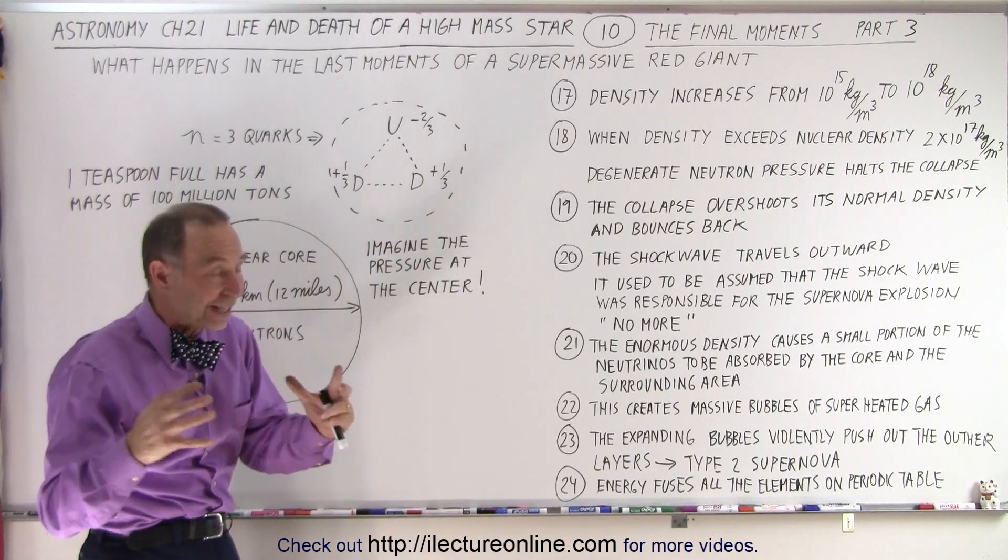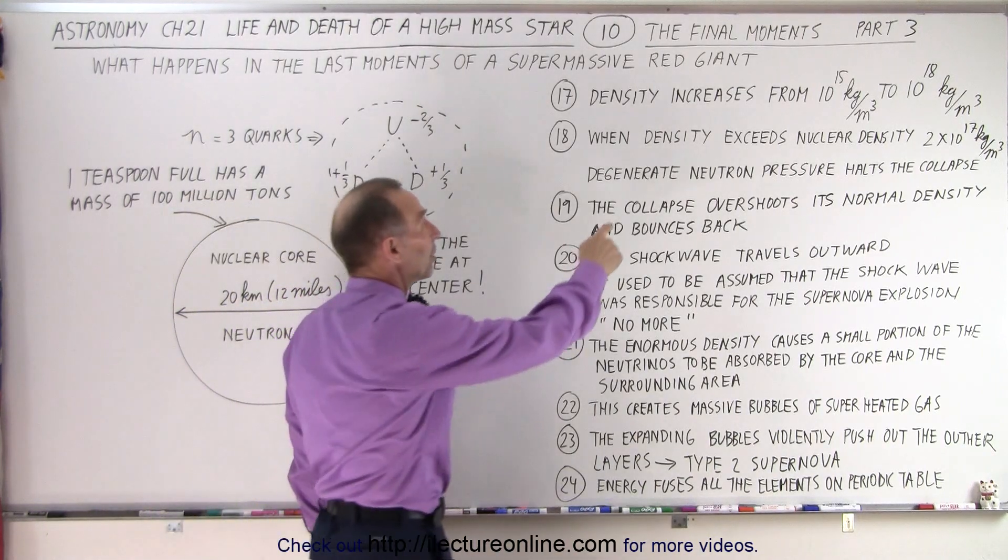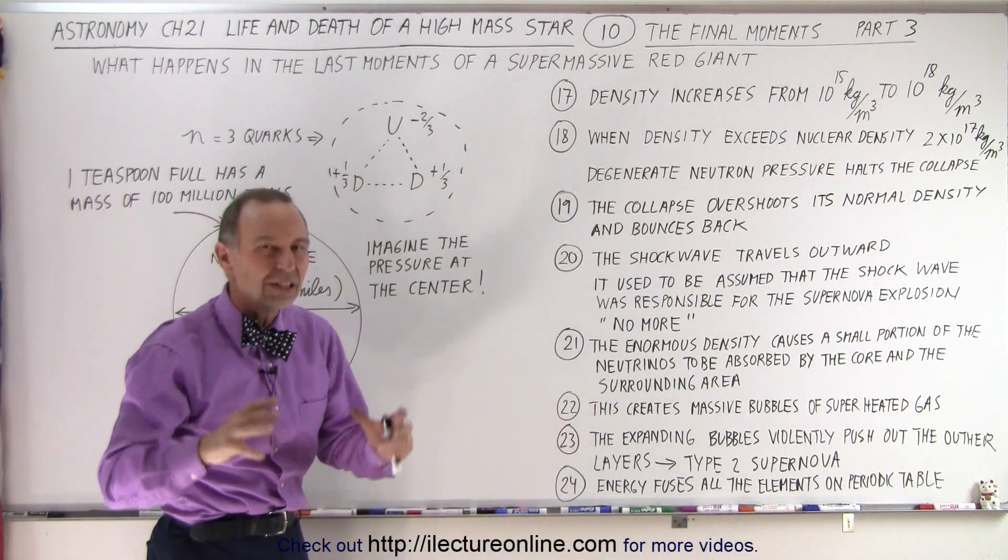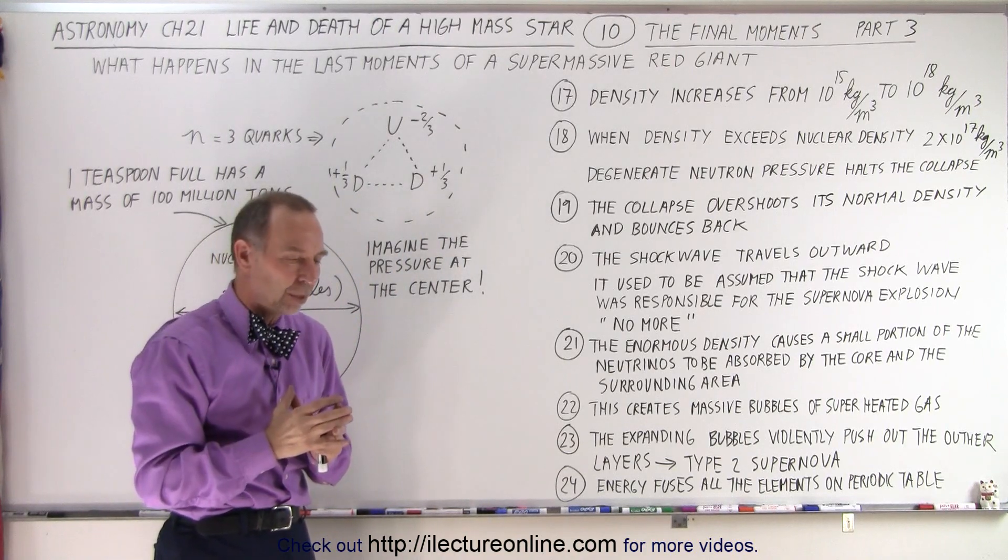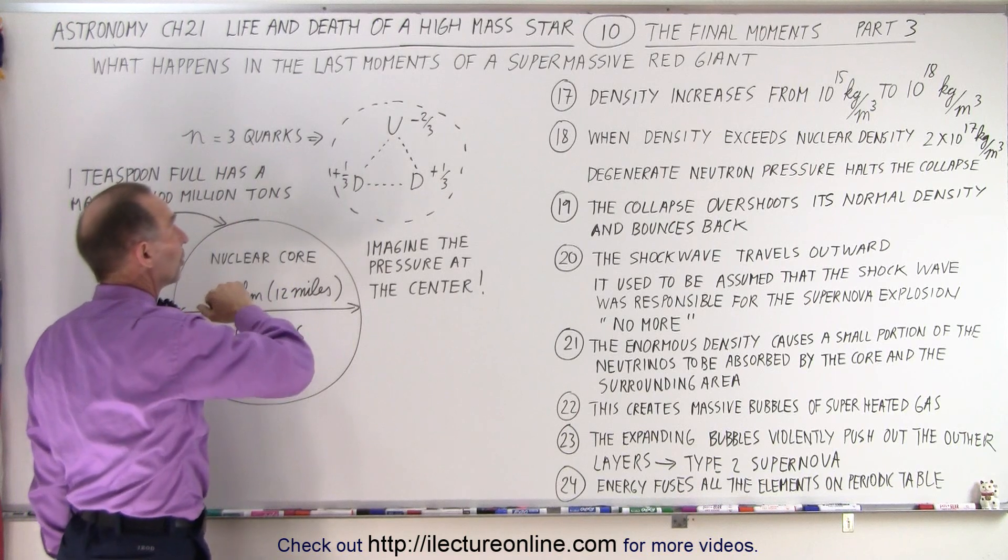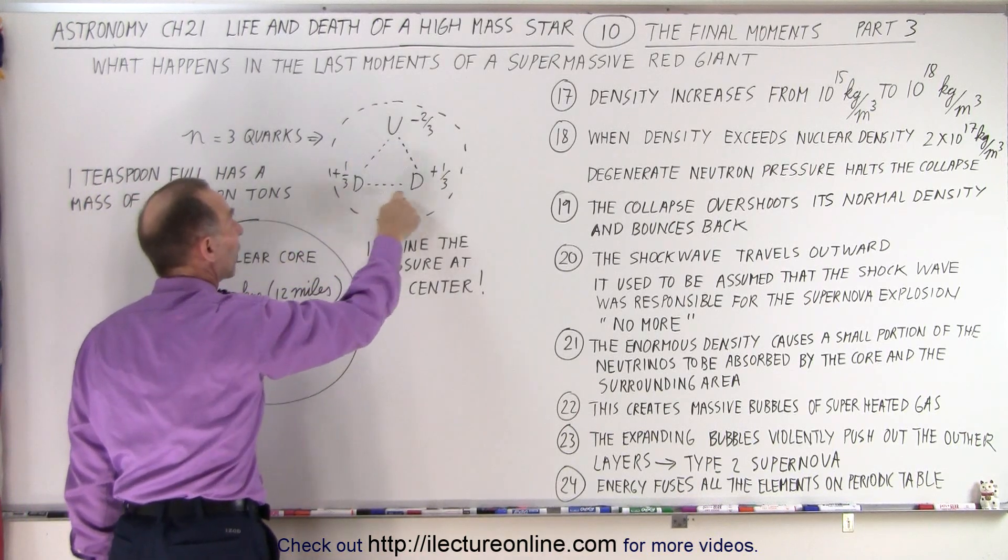So what holds this final collapse? It's called the degenerate neutron pressure that holds the collapse. So what is the degenerate neutron pressure? Well, it turns out that neutrons are made out of three quarks.